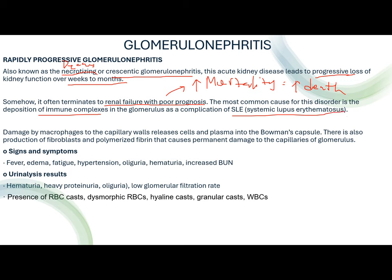Damage by macrophages to capillary walls releases cells and plasma into the Bowman's capsule. There is also production of fibroblasts and polymerized fibrin causing permanent damage to the glomerular capillaries. Signs and symptoms include fever, edema, fatigue, hypertension, oliguria, and hematuria. In urinalysis, you would find hematuria, heavy proteinuria, oliguria, low glomerular filtration rate, RBC casts, dysmorphic RBC, hyaline casts, granular casts, and white blood cells.